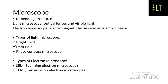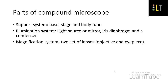We will be studying each of these microscopes in detail. But before that, we will first see the different components or parts of the compound microscope. The components can be divided into three systems: the support system, the illumination system, and the magnification system.